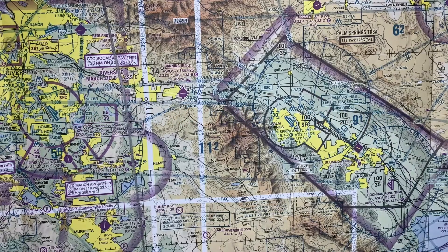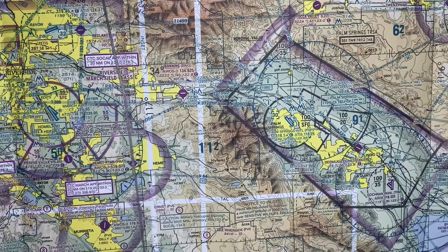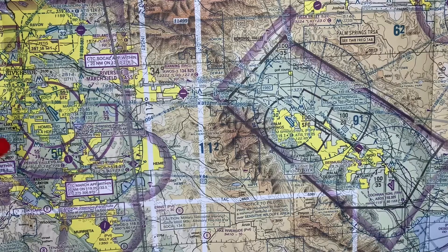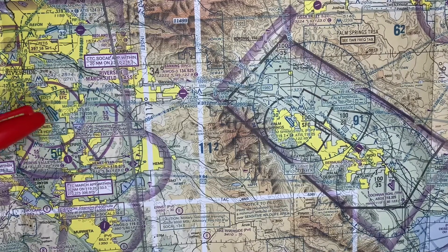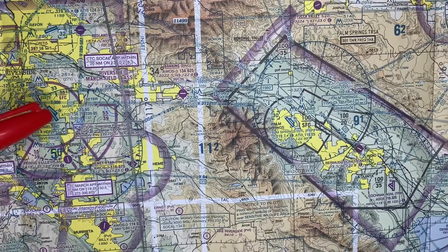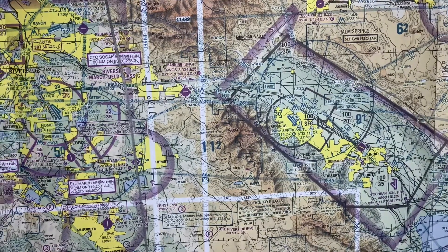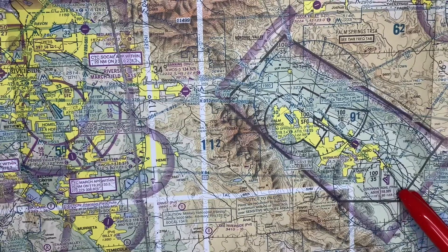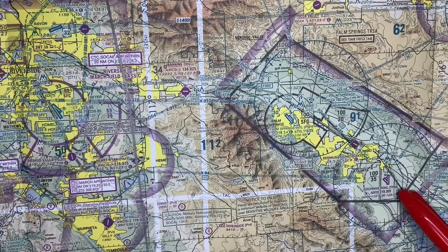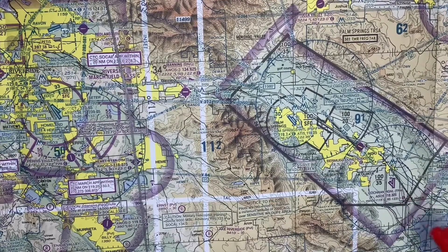In this video I'm going to show you how to measure a true course using a sectional chart. We're going to go from March Air Force Base to Cochrane Regional KTRM.